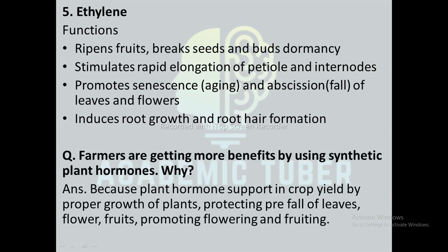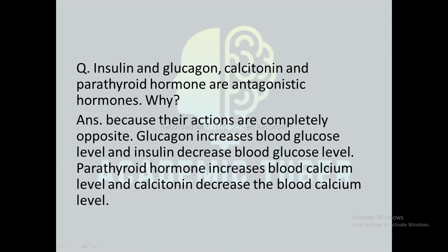Plants get more benefits by using synthetic plant hormones because they improve crop yield through proper growth, preventing premature fall of leaves, flowers, and fruits, and promoting flowering and fruiting. Insulin and glucagon, and calcitonin and parathormone, are called antagonistic hormones because their actions are completely opposite. Glucagon increases blood sugar level while insulin decreases it. Similarly, parathormone increases blood calcium level while calcitonin decreases it. That is why they are known as antagonistic hormones. With this, we have completed the notes on this unit — Human Glandular System. I hope this video was useful to you.